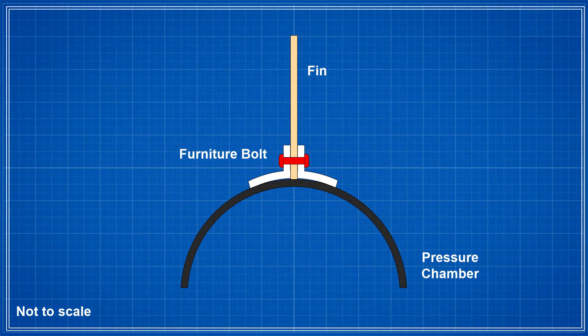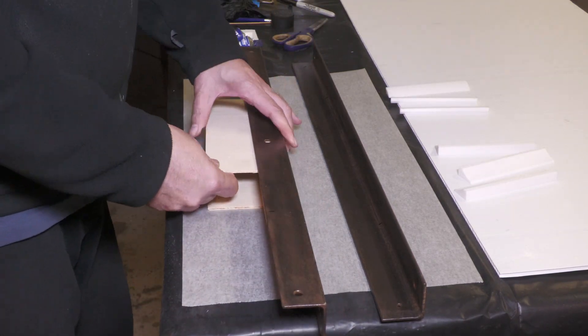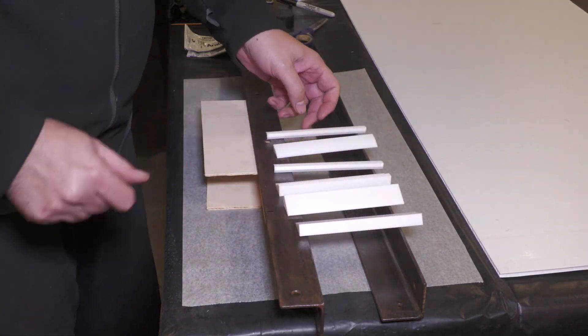It would have been easier to make the brackets out of aluminum L-channel, but we really had no way of reliably curving one of the channel sides. So we decided to mold the brackets from carbon fiber. For that we first needed to make up some molds.